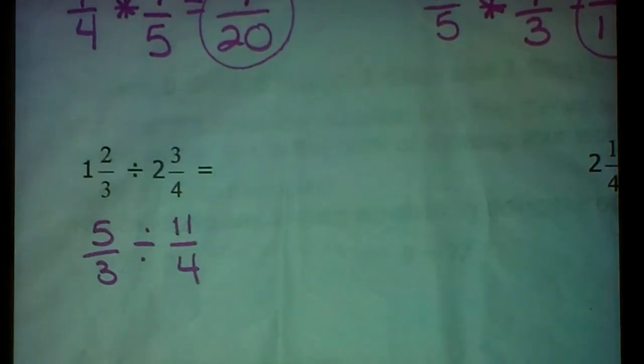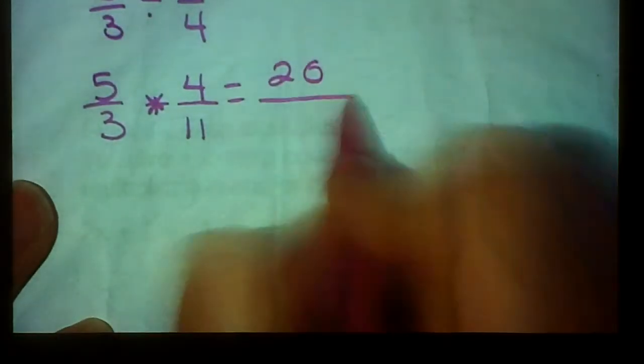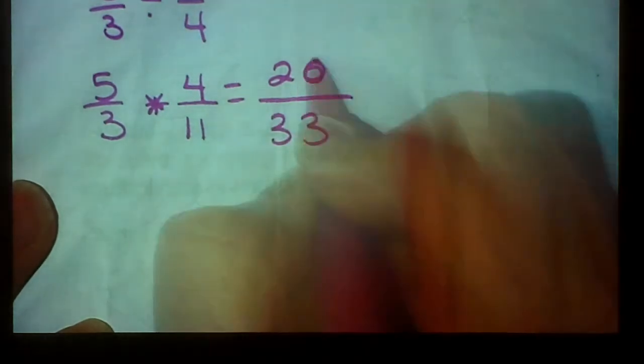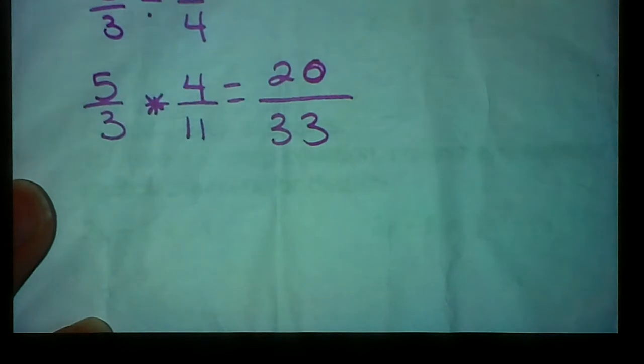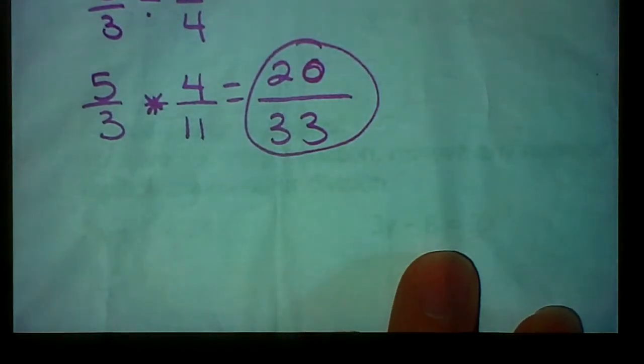Alright, now I'm going to solve these just like I did the ones above. Keep the first. Switch to multiplication. Flip to the reciprocal. Then just go straight across. 5 times 4 is 20. 3 times 11 is 33. That should look more like a 0. So 20, 30 thirds. And there's not much other than 1 that goes into both of those. So 20, 30 thirds is your final answer there.